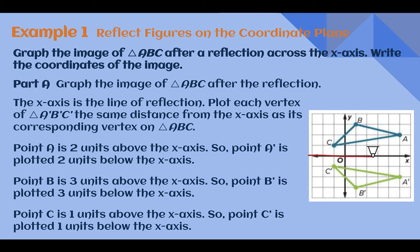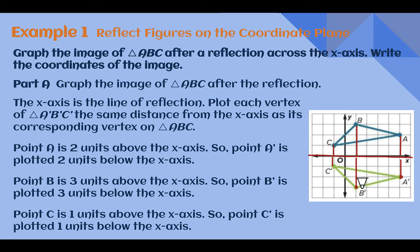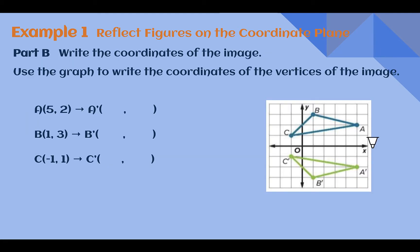So again, here was our line of reflection. A is two units above, so A prime must be two units below. B was three units above, so B prime must be three units below. C one unit above, so C prime is one unit below. Once we have those three new points, then we can draw our shape. As we did with translations, once we've reflected our figure, we now need to be able to write our coordinates of our image.